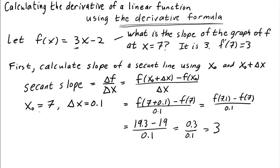In fact, we didn't need to put in x0 equals 7 and delta x equals 0.1 to get 3. This should work in general. So if we take the general formula and plug in our expression for f, we should get 3. So f of x0 plus delta x is 3 times x0 plus delta x minus 2. And then we need to subtract off f of x0, so minus 3 of x0 minus 2 divided by delta x.